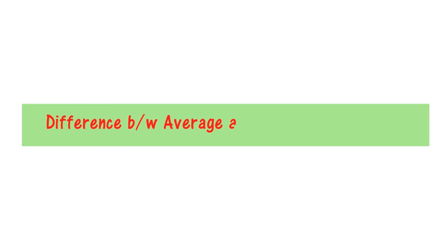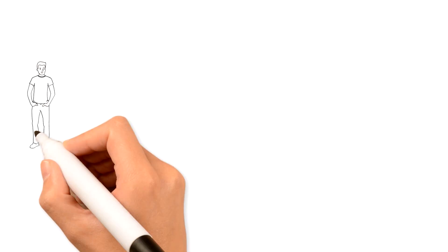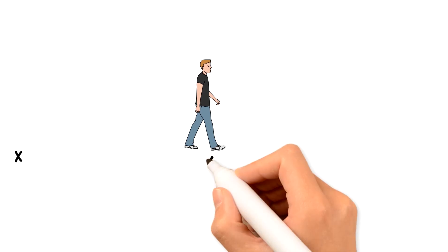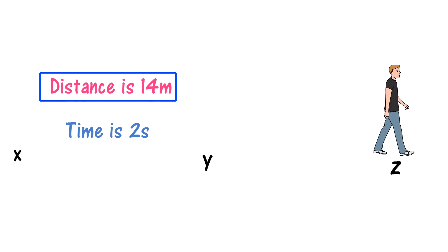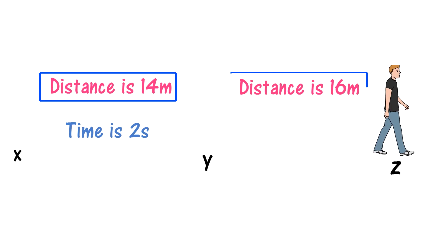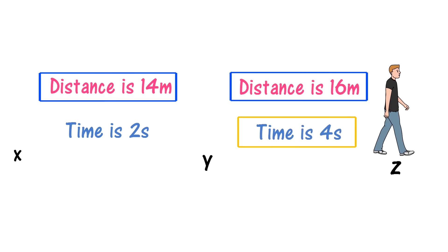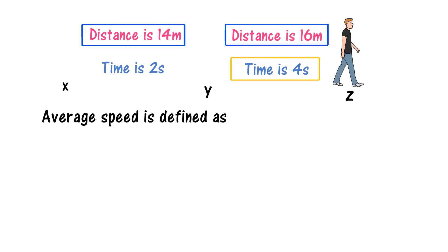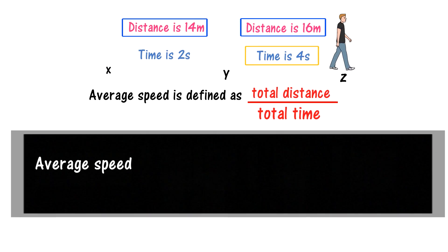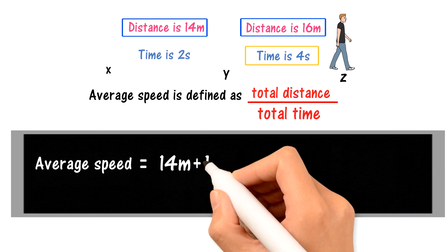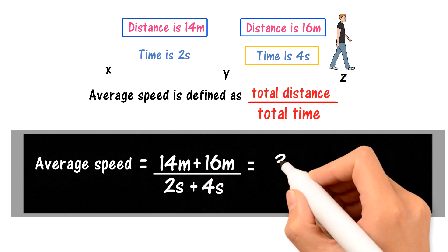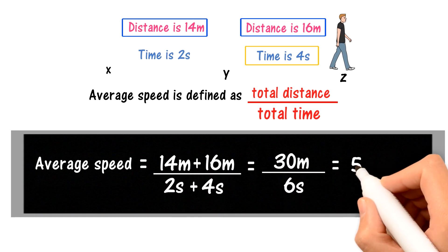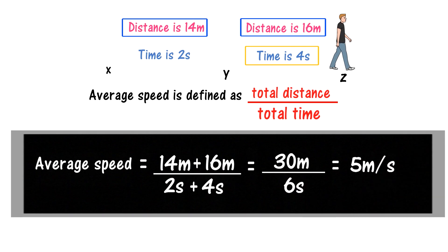Now let me explain the difference between average speed and instantaneous speed. Let a person standing at point X move to point Y, covering 14 meters in 2 seconds, and then from point Y move to point Z, covering 16 meters in 4 seconds. Average speed is defined as total distance divided by total time: 14 plus 16 meters divided by 2 plus 4 seconds equals 30 divided by 6, which gives 5 meter per second.